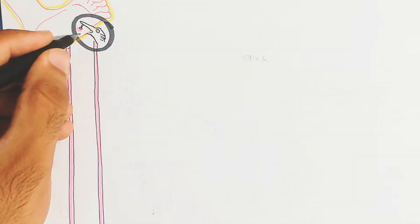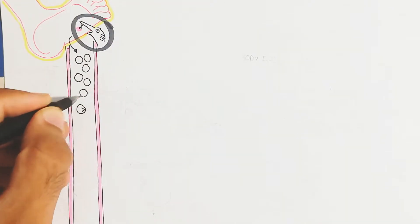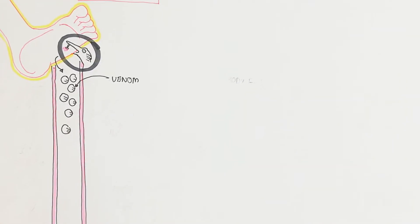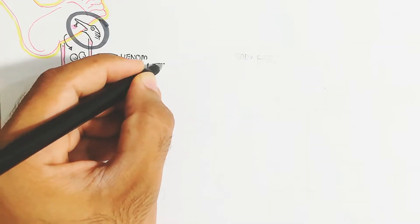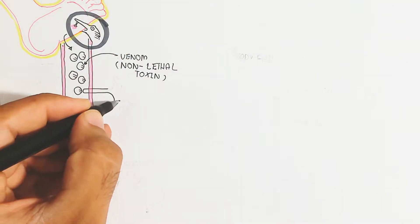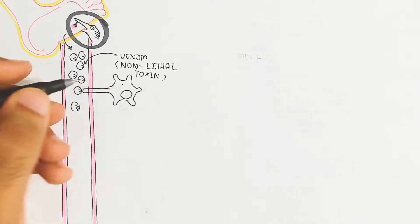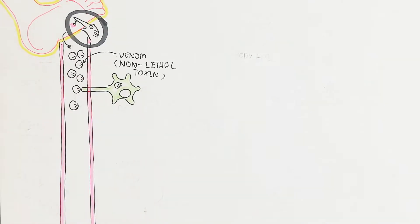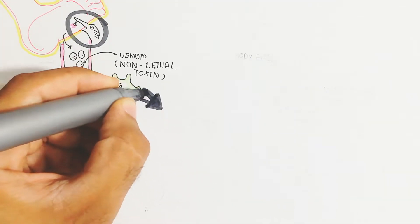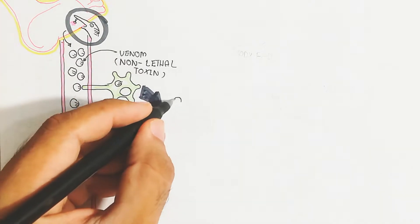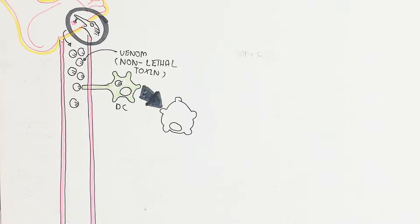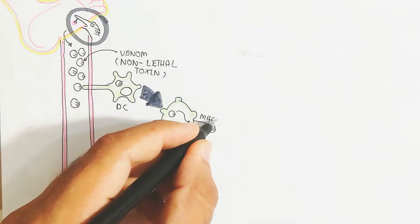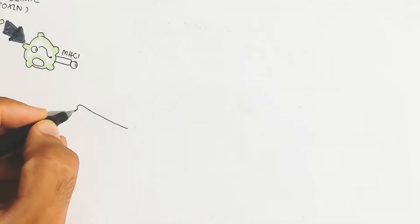After a bite, the venom moves into the blood circulatory system, and the bite region dramatically increases the area of venom exposure. If the toxin is non-lethal, recovery is possible due to the allergic reaction. The dendritic cell recognizes the venom, engulfs it via endocytosis, and forms MHC class 1 molecules, initiating an immunological response.